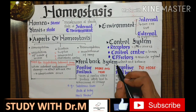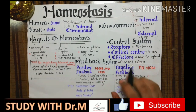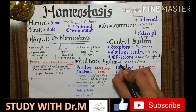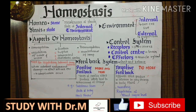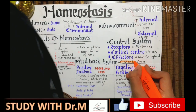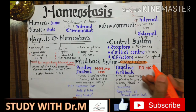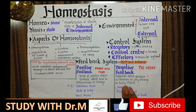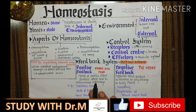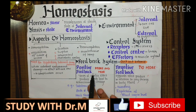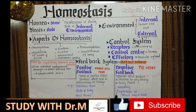Now let's come to the feedback system. The feedback system is the check-and-balance mechanism that determines how a change occurs and how long the response must remain in operation. The feedback system is of two types: positive feedback and negative feedback. For positive feedback, remember the phrase 'more and more.' For negative feedback, remember 'no more.'